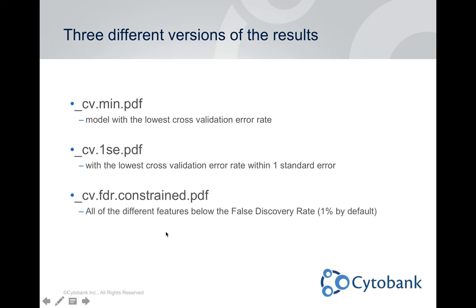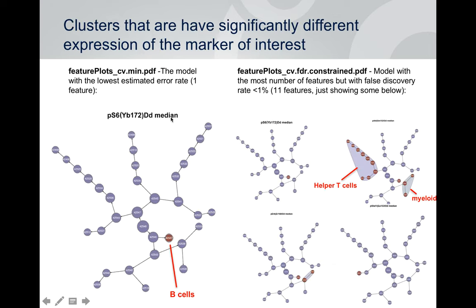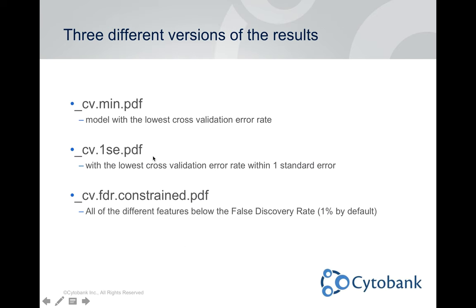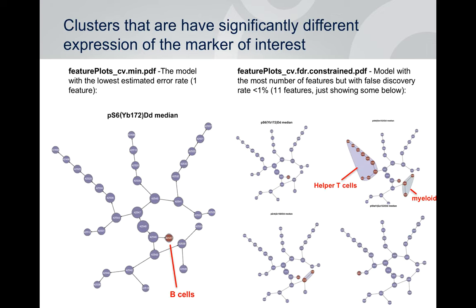So there are three different versions of the PDF results. cvmin is the model with the lowest cross-validation error rate. cv1se is the model with the lowest cross-validation error rate within one standard error. FDR-constrained displays results from all the different features below the false discovery rate threshold — you can set that cutoff yourself; by default it's 1%, but it's variable.